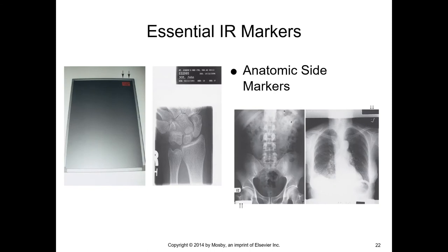Image receptor markers: it's a legal requirement. Our x-rays are part of the patient's chart, which is a legal document. It's a requirement that we include hard anatomical side markers on all of our radiographs. Those are shown here — cut off in this view, but we can still tell it's an R for right indicating the right side of the body, and an L indicating the left side of the body.